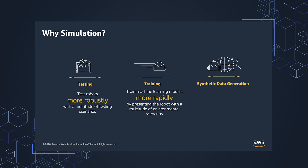Machine learning training. Simulation has the ability to have a real-time factor of greater than one. This means that your machine learning training can happen quicker than if done with real physical robots' data. Also, AWS RoboMaker simulations have the ability to run simulations concurrently. This means that you can run your machine learning training in parallel, thereby decreasing the time required to train your models. Synthetic data generation: because we are able to change the environments, the lighting conditions, the scenarios and the objects around the robot, we are able to generate a more cost-effective and significantly richer dataset required for your machine learning algorithms.